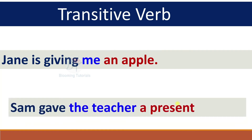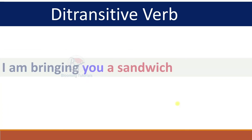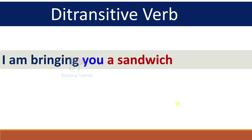'Sam gave the teacher a present.' Sam gave what? A present — direct object. To whom? The teacher — indirect object. 'I am bringing you a sandwich.' I am bringing what? A sandwich — direct object. To whom? You — indirect object.